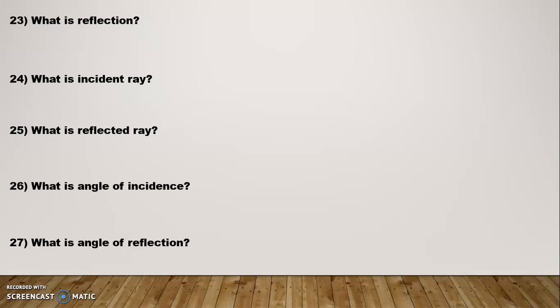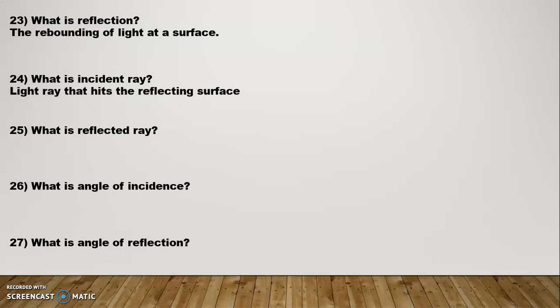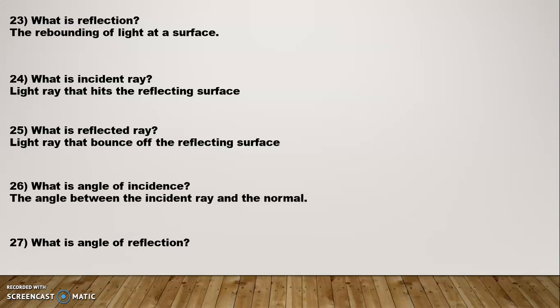Question Number 23: What is reflection? The bending of light at a surface — when it falls on the surface it reflects back at the same angle — that is reflection. What is an incident ray? A light ray that hits the reflecting surface. What is a reflected ray? The ray that bounces off the reflecting surface. What is the angle of incidence? The angle between the incident ray and the normal — the normal is always at 90 degrees. What is the angle of reflection? The angle between the reflected ray and the normal.